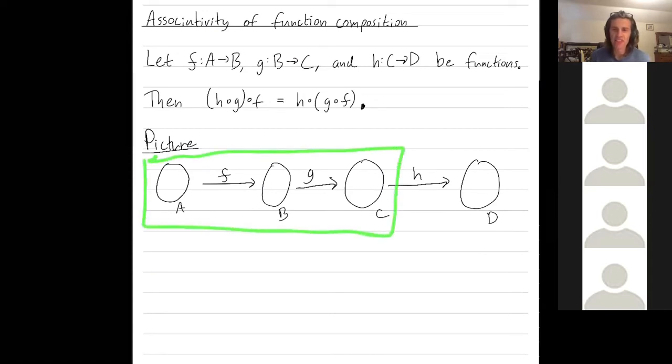If we only had f and g, we sort of talked already how you could take f and g and combine them together to get a function from A to C. You could take f and g, combine them together, and you get a function from A to C.